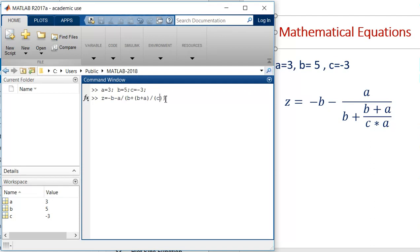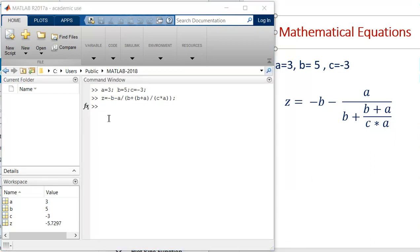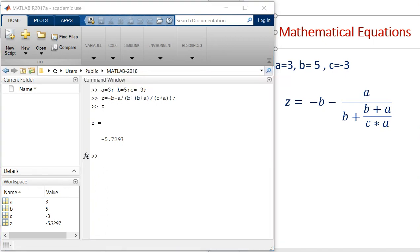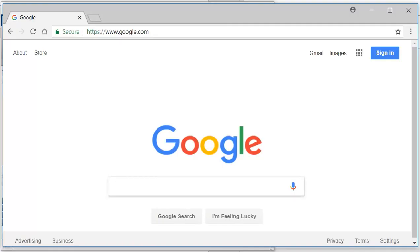Same way, c asterisk a. And this is my function. So now if I enter this over here, I will get value of z as minus 5.729.